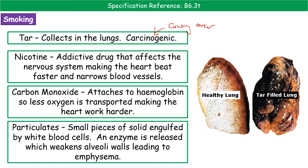Carbon monoxide binds irreversibly to haemoglobin, meaning less oxygen can be transported, so your heart has to work harder to supply your cells with oxygen. Particulates are small pieces of solid that become engulfed by white blood cells; as a result, an enzyme is released that weakens the walls of the alveoli, leading to emphysema, which affects your ability to get enough oxygen into your body.